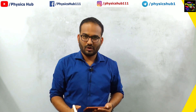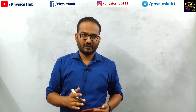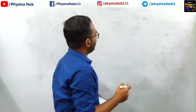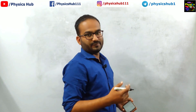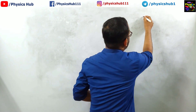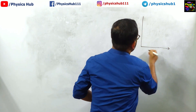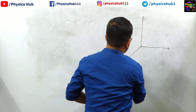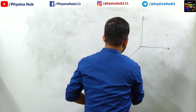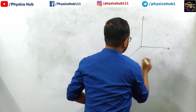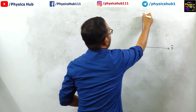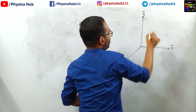Let us now talk about spherical polar coordinates. Let us start with the coordinate system which you have: x, y, and z. This is the Cartesian coordinate you already know — x, y and z.